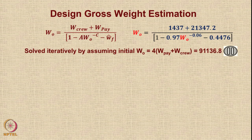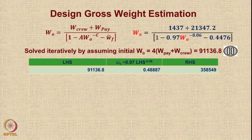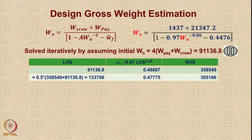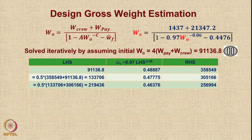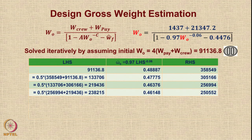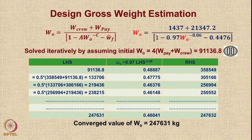We now solve iteratively. Assume the first value of W0 as 4 times the payload plus crew. Calculate W_e_bar = 0.97 × W0^(−0.06), then compute the RHS. There will be a large difference initially. In each iteration, take the average of the new RHS and old LHS and repeat. After several iterations, the solution converges to W0 = 247,631 kg.